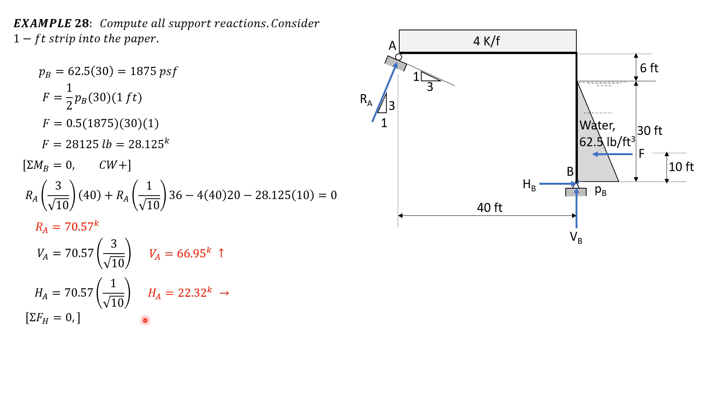Then summation of forces horizontal equals 0. So we have HA, 22.32 plus HB equals F 28.125. So HB is equal to 5.805 kips. And it is rightward as shown in the figure.